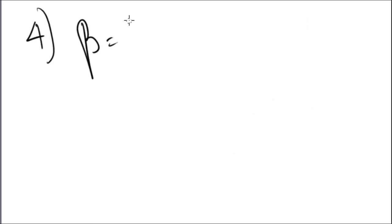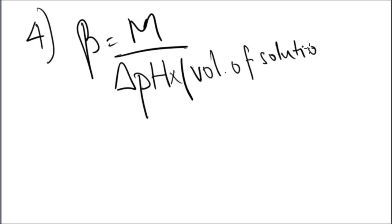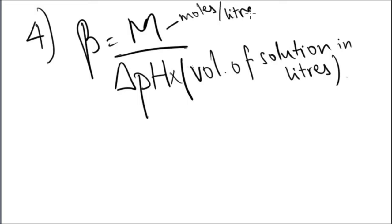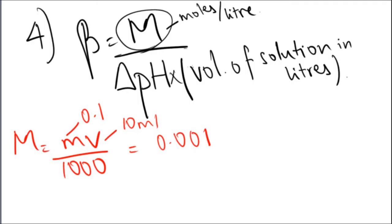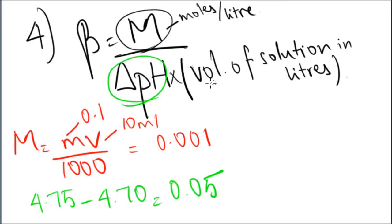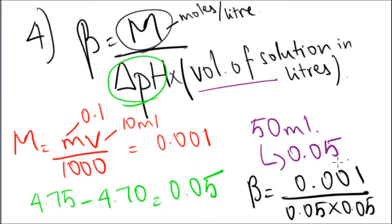The last question was buffer capacity. Buffer capacity is equal to molarity divided by the change in pH times the liters of the solution, provided it is in liters. So we were given three different values, but let's start to find the molarity first. The molarity of the added acid, which was HCl, is m times v. We were given the number of moles, which was 0.1, but the volume of the solution was 10 milliliters, which is 0.01 liters, and hence we get an answer of 0.001 as the molarity. The initial pH was 4.75, the final was 4.70, so the change is 0.05. The volume of the solution was given as 50 milliliters, so 0.05 liters. Putting all these values in our buffer capacity equation, we get 0.001 divided by 0.05 times 0.05, and our buffer capacity is 0.4.